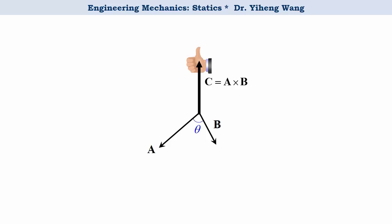Vector C is perpendicular to both vector A and vector B. In other words, vector C is perpendicular to the plane formed by vector A and vector B.